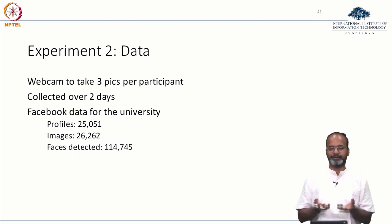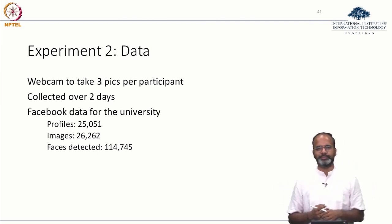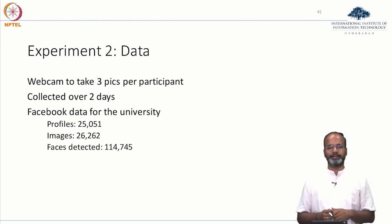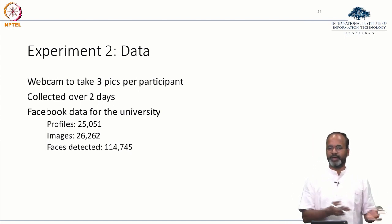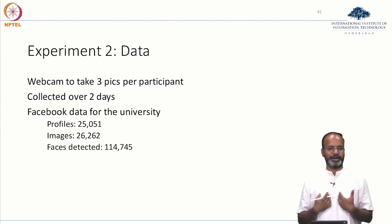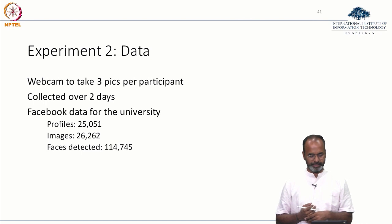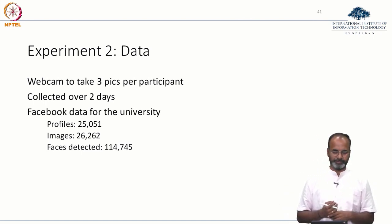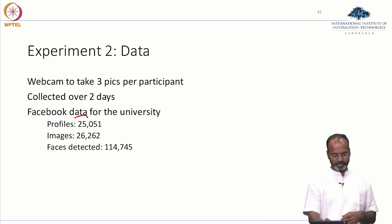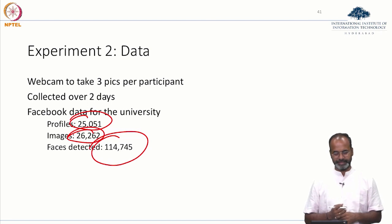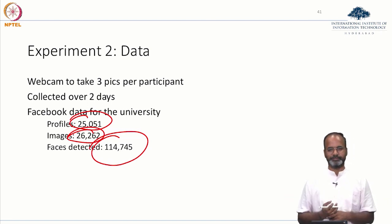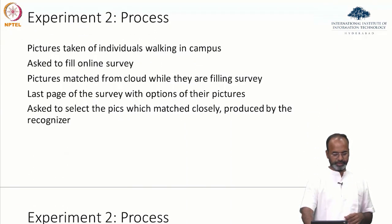For the offline part, they set up a small webcam on campus for 2 days and just took pictures of people walking around. They took 3 pictures of each participant. It was all IRB approved and users were consented into the study. The Facebook data for the university they collected had about 25,000 profiles, about 26,000 images, and about 114,000 faces detected.